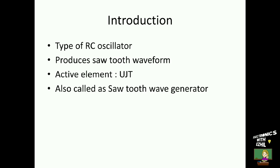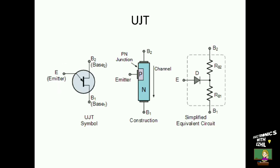Let me explain why the relaxation oscillator is called so while explaining the waveform. Before going to discuss the topic, let us see some basics about UJT to understand the operation of the relaxation oscillator much better. This is the symbol of UJT. It has three terminals: emitter, base 1, and base 2, and it has one junction. So it is called uni-junction transistor.